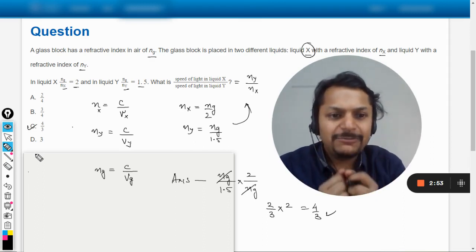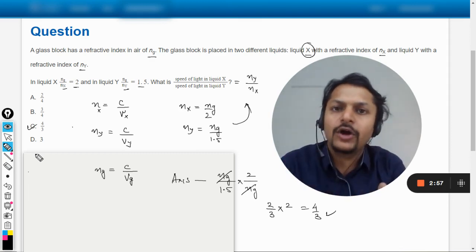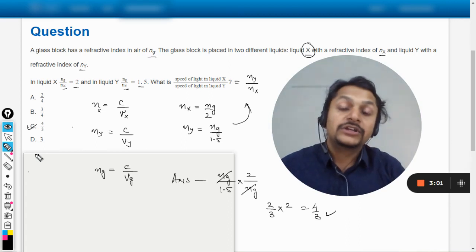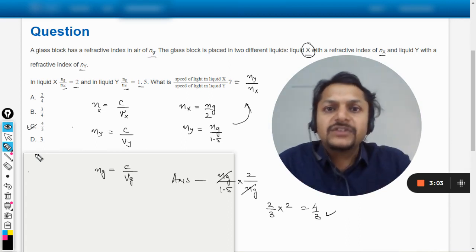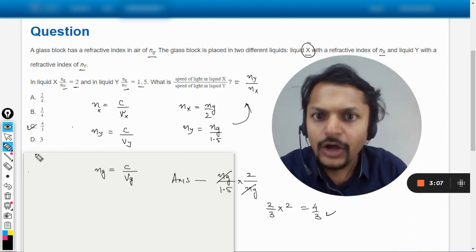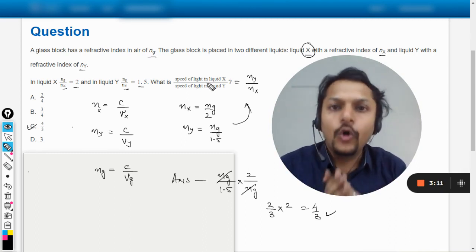Dear students, the statement is that much confusing. They have brought in this glass block from somewhere and they have just tried to confuse us a lot. Like in the first liquid we inserted the glass - that is not required at all, because when you talk about the speed of light inside something, only refractive index is taken care of, nothing else.